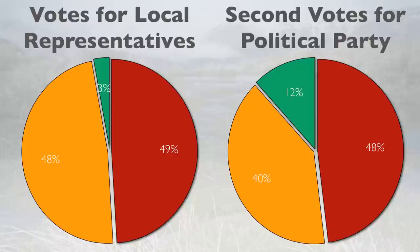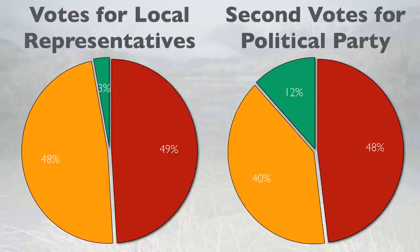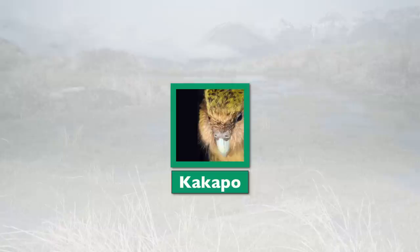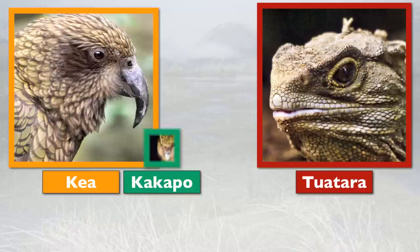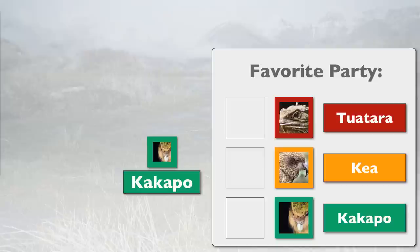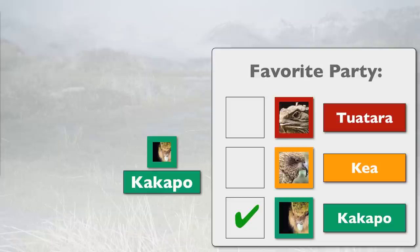This point is worth expanding on. Notice how, with MMP, the percentage of votes for the local representatives isn't the same as for the parties. This is because in the local elections, citizens have to vote strategically. For example, Kakapo voters don't like Tuatara at all, but they can tolerate Kia. Since there are so few Kakapo voters, they know that their candidate doesn't have a chance of winning the local election, so it's really a race between the two big parties. Thus, many of the Kakapo will vote Kia in the hope that he might win and be their representative. However, when it comes to voting for their favorite political party, this strategy doesn't matter. The more votes a party gets, the more representatives it has on the council, so citizens are free to vote for smaller parties they like, knowing that every vote counts.